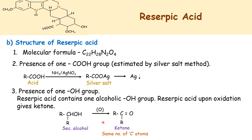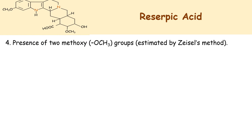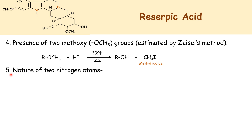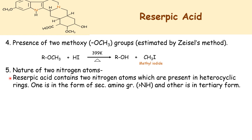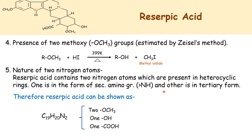The reserpic acid contains one alcoholic OH group, confirmed by the fact that reserpic acid upon oxidation gives a ketone, because a secondary alcohol upon oxidation gives a ketone with the same number of carbon atoms. Then next, reserpic acid contains two methoxy groups, estimated by Zeisel's method. Reserpic acid contains two nitrogen atoms present in a heterocyclic ring — one in the form of a secondary amino group and the other in tertiary form. Reserpic acid contains two methoxy groups, one alcoholic OH group, and one COOH group.